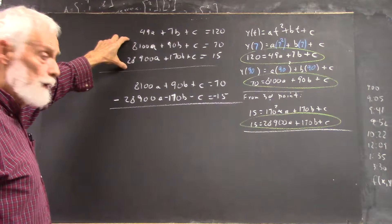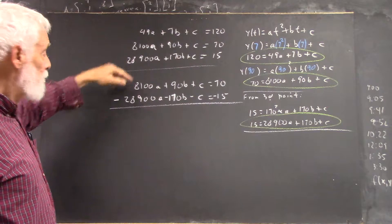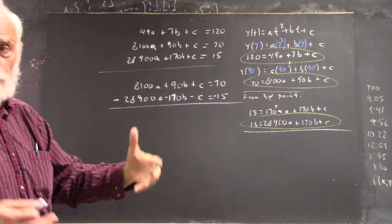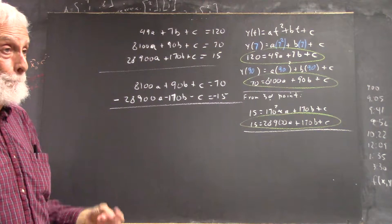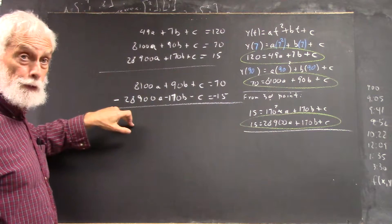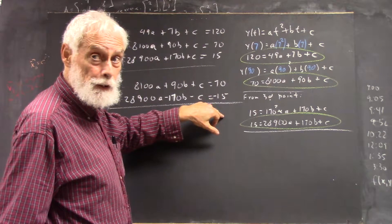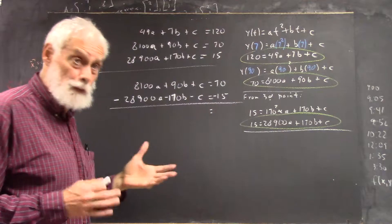And then I take these two equations and write them down again, except I change all the signs in the second equation, meaning I multiplied the second equation by negative one. So it's still equivalent to this equation. Now we add these two. Well, what's 70 added to negative 15? 55, right?